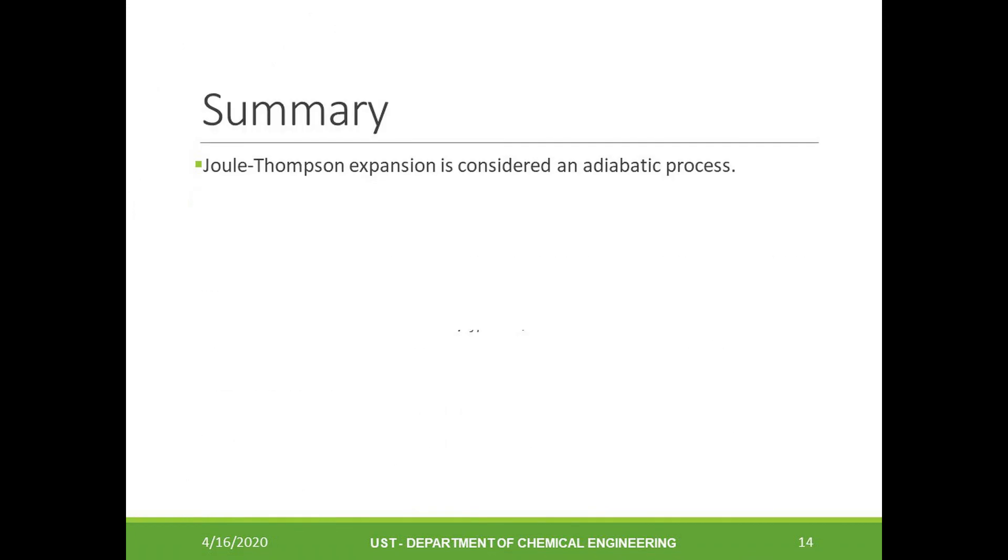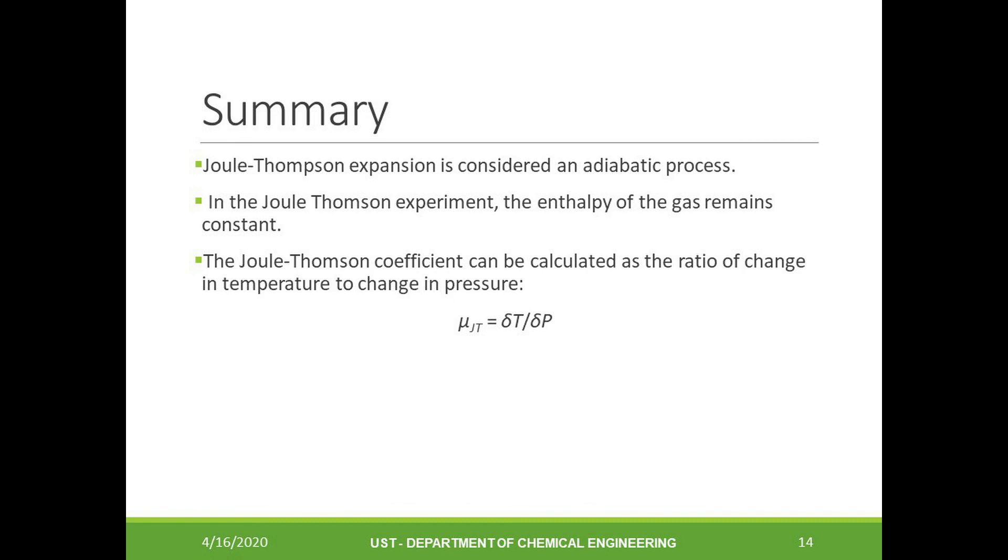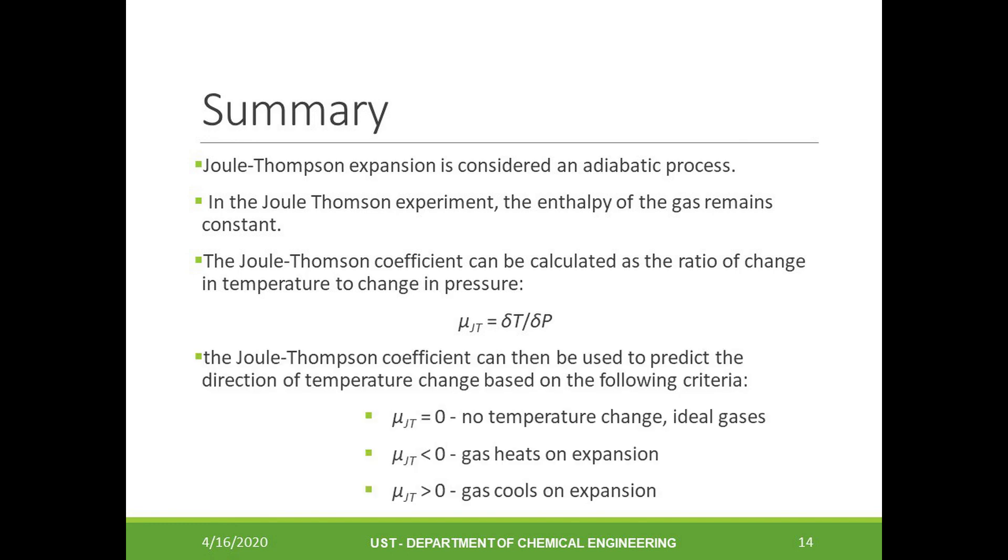To finally end this lecture, let's look at some of the important things that we've learned. First is that the Joule-Thompson expansion is considered to be an adiabatic process. Second, we know that during this process of gas expansion, the enthalpy remains the same, hence the process is actually isoenthalphic. Experimentally, what we are actually determining in a Joule-Thompson experiment is the Joule-Thompson coefficient, which is given in this equation. We have to remember: the values of the Joule-Thompson coefficient tell us something about the gas when they expand. For example, if the Joule-Thompson coefficient is greater than zero, then gas cools upon expansion. If the Joule-Thompson coefficient is less than zero, then the gas heats up or warms up during expansion. The Joule-Thompson coefficient for ideal gases is always zero.